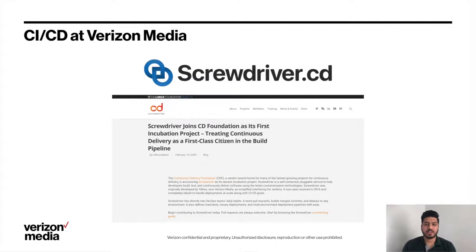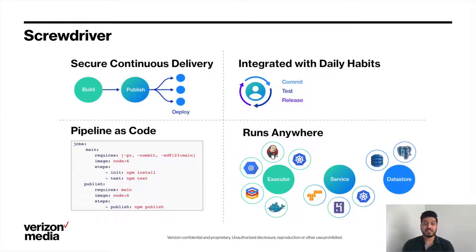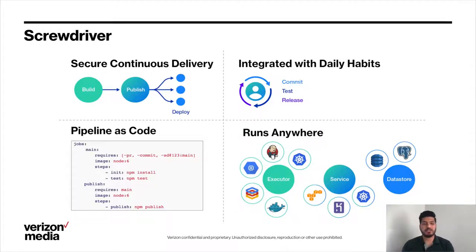Let's get started by talking about CI-CD at Verizon Media. We use Screwdriver as our tool of choice for CI-CD. It's a homegrown solution which is now an open-source project and is part of the CD Foundation. Salient features include secure build and deploy of code, integration with the developer's daily software development cycle, support for pull request builds and statistics, a YAML-based DSL to declare the pipeline as code, and the ability to run anywhere — bring your own executor, service, and data store.